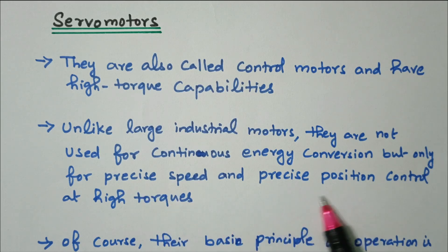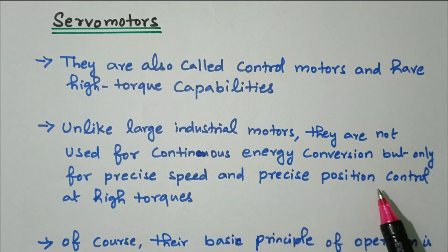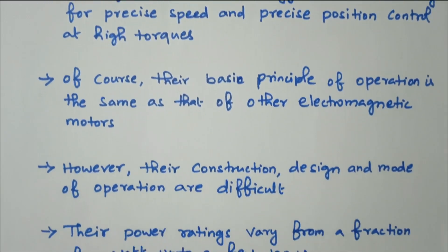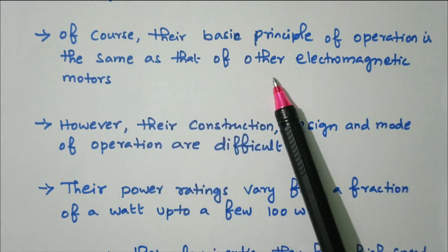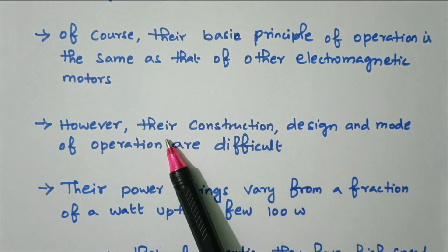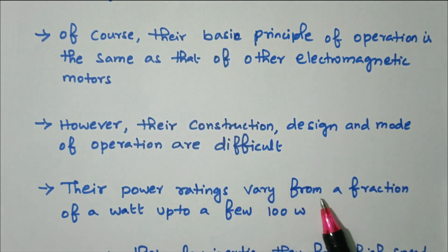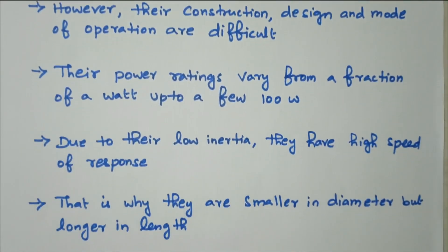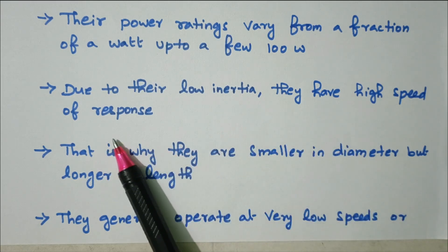They are used only for precise speed and position control at high torque. Like a normal motor, it is not continuously rotating; it is used for speed and position control with high torque. Their basic principle of operation is the same as that of other electromagnetic motors; however, their construction, design, and mode of operation are different. Their power ratings vary from a fraction of a watt up to a few hundred watts. Due to their low inertia, they have a high speed of response.